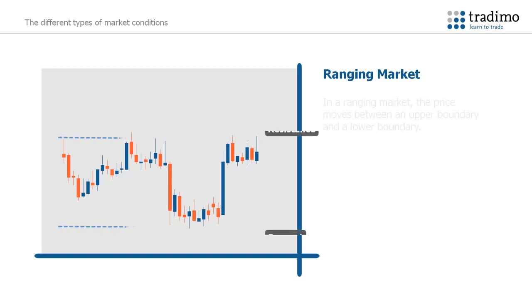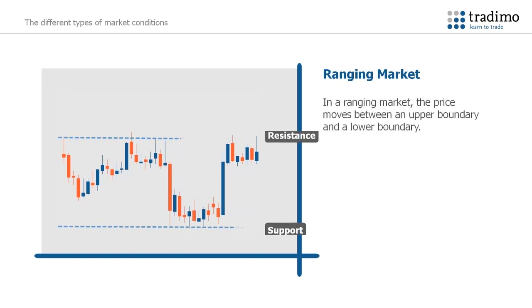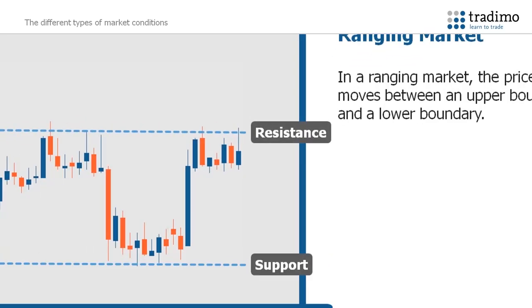In a ranging market, the price moves between an upper boundary and a lower boundary. Usually, you can observe a support level and a resistance level. However, a ranging market may not always be clear to see.